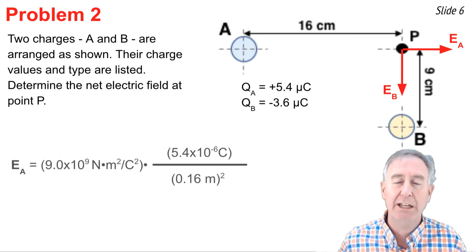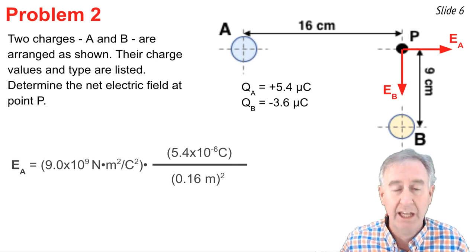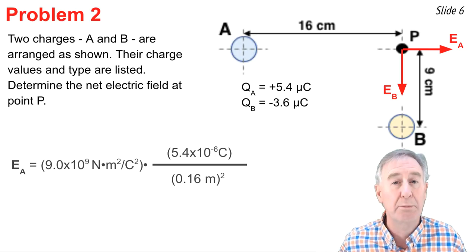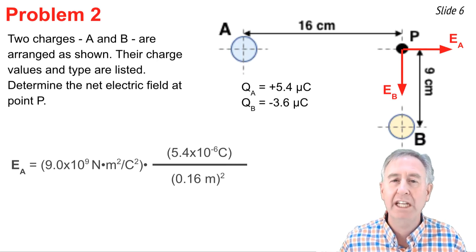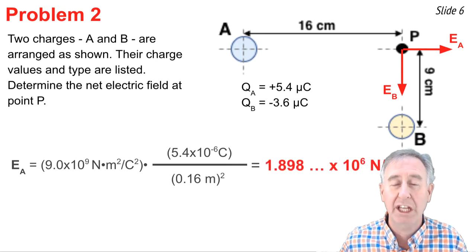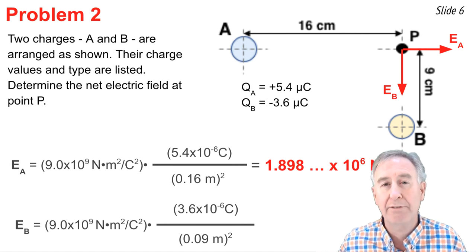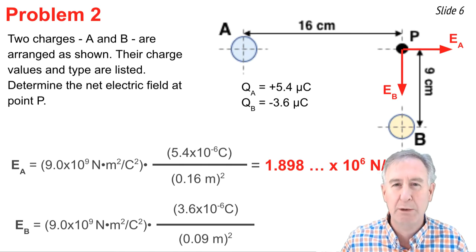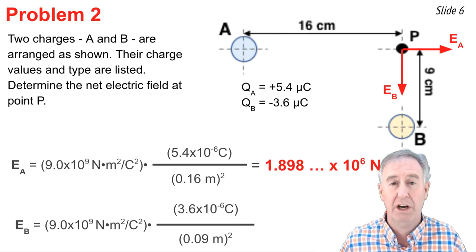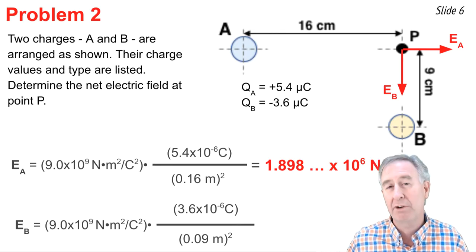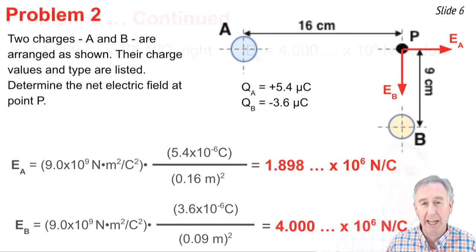Finding the individual values of EA and EB is straightforward. I simply use my math equation, substituting in the quantity of charge on A, and the distance 16 centimeters is translated to 0.16 meters, since the value of K uses units of meters. I square that value of d, and I calculate my value for EA. I repeat the process for the electric field caused by source charge B. You'll notice that for the value of Q, I use the absolute value. I don't put the negative 3.6 times 10 to the negative 6 in there, since Q stands for the quantity of charge, and the negative is simply the type. I also have to convert the 9 centimeters to 0.09 meters and square it, and I end up with my two values for the electric field of A and B.